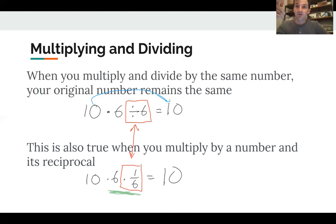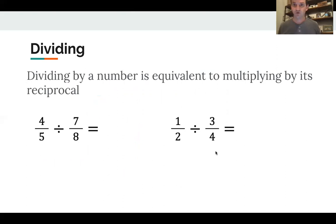So anytime we have a division problem, if we want to, we can change it to multiplying by the reciprocal. This is very, very helpful. So dividing by a number is equivalent to multiplying by its reciprocal. Let's see what I mean.